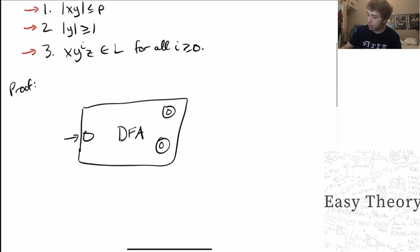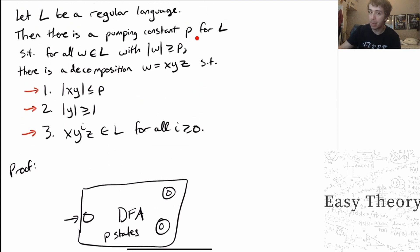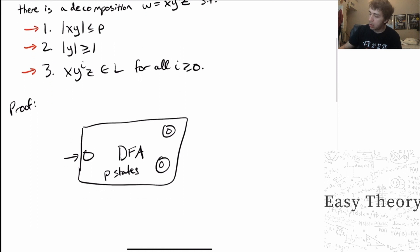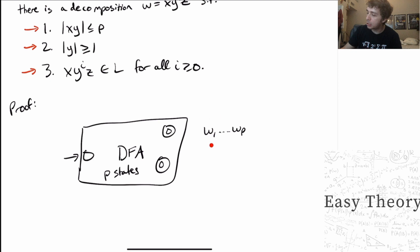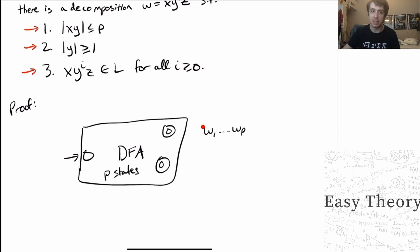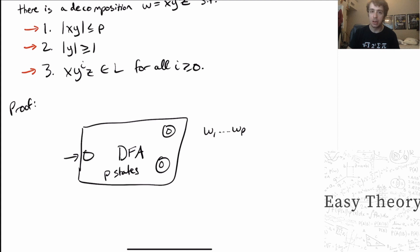Let's suppose this DFA has p states, where p reflects the pumping constant. If we look at a string of length p — w1 up to wp — and feed this string into the DFA, we will see p+1 states, because before reading anything we've seen one state (the start state), and then reading one character we've seen two states, and so on. After reading p characters we'll have seen p+1 states. But the DFA only has p states, so there must be a repetition.